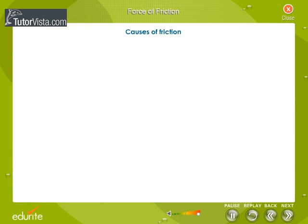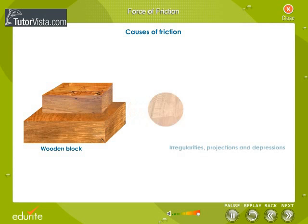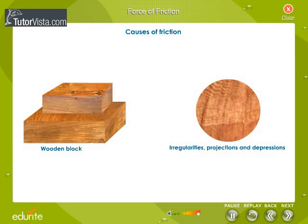Causes of friction: Displayed on your screen is the microscopic view of two wooden blocks placed one over the other. On the surface of the wooden block there are irregularities, projections and depressions. Because of this unevenness, the surfaces get interlocked and oppose the motion. The modern view states that apart from the interlocking of the two surfaces in contact, the main cause of friction is the atomic and molecular forces of attraction between the two surfaces at the point of contact.